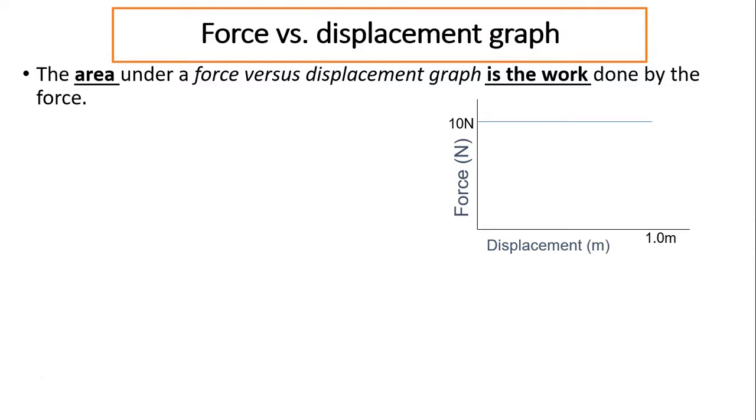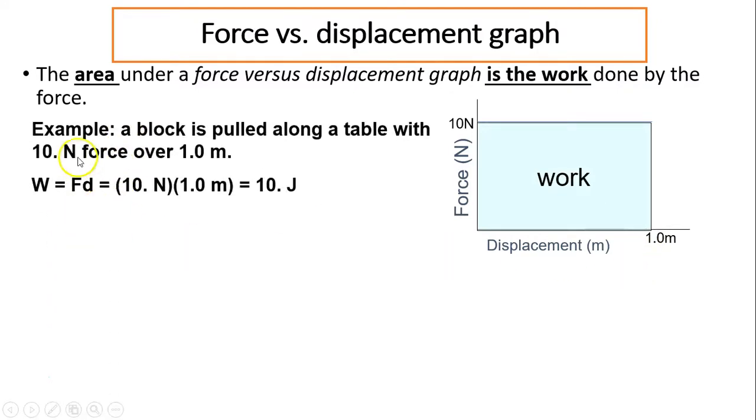Force versus displacement graph. So the area under a force versus displacement graph is work done by the force. For example, if you're given a graph like this, you're asked to figure out the work done by one meter. How do you do it? Well, you can figure out the area.